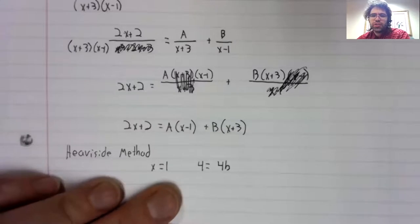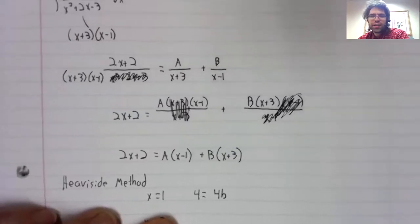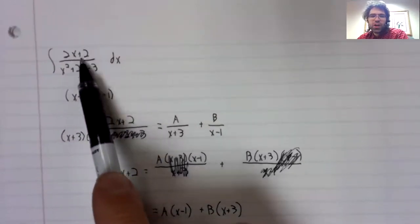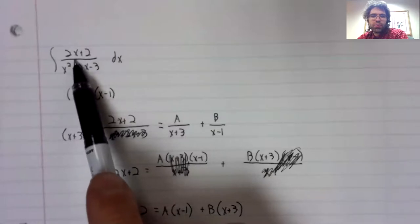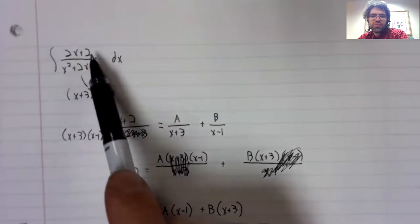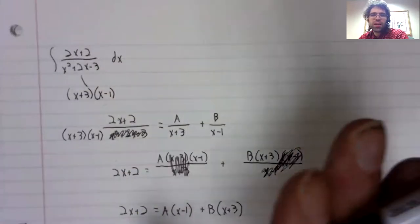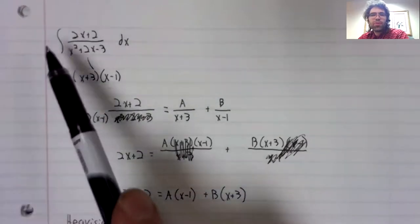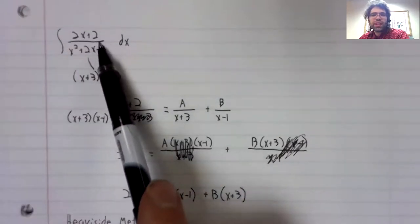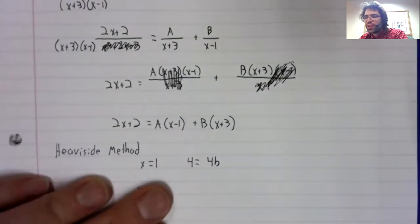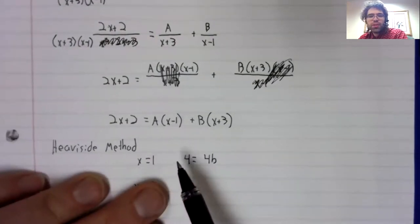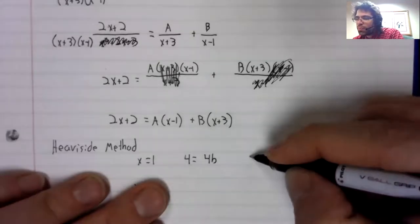I just realized that this is not the example I put into the last video. But never mind, we'll power through this example. If we let x equal one, then four equals four b, and b equals one.